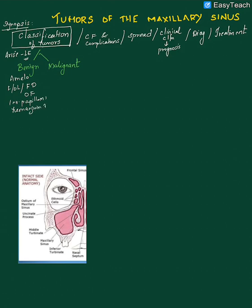Coming to malignant tumors, 80% will be squamous cell carcinomas. Very rarely, aggressive tumors such as anaplastic carcinoma, adenocarcinoma, or melanoma can also arise from the maxillary sinus. These are the main benign and malignant tumors of the maxillary sinus.